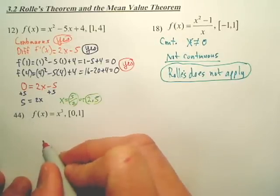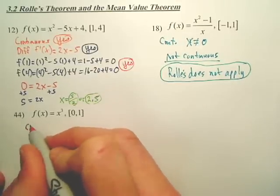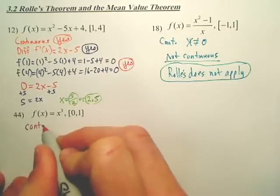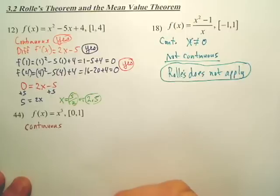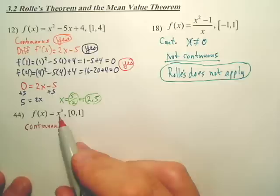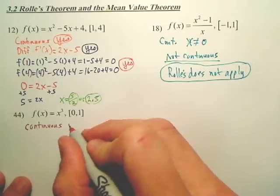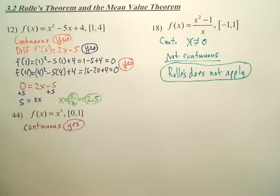For Mean Value, our first question is, is x to the third continuous? Can you plug any number into x to the third and make it non-continuous? No, it's a polynomial. There's no way to make that thing not continuous. So this is a yes, or a checkmark, or whatever you want to say. I checked it. I'm good.